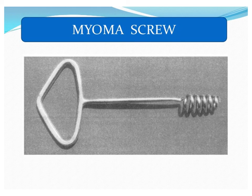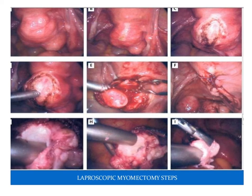The myomectomy screw is used when the abdominal cavity is opened and the uterus is exposed. An incision is made on the most prominent part of the fibroid, and as the wall of the uterus is separated the myoma can be enucleated with the help of this screw. This is demonstrated in laparoscopic myomectomy pictures — showing the bossing created by the fibroid, the incision given, and the screw inserted for enucleation.